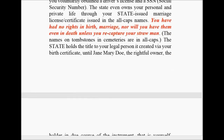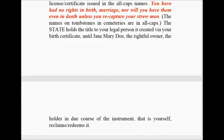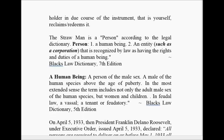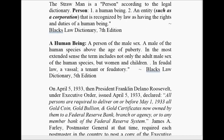The names on tombstones and cemeteries are also in all caps. The state holds the title to your legal person, created for your birth certificate. That's why they give you a certificate, not the actual title. The holder in due course of the instrument — that is yourself — has to reclaim and redeem it. The straw person is a person according to the legal dictionary: a human being, or an entity such as a corporation, that is recognized by law as having the rights and duties of a human being. So this is how they give you the rights, but don't acknowledge you as being a human being. According to Black's Law Dictionary, which they use in the Roman Catholic law system, a human being is a male of the human species above the age of puberty. In feudal times, it was a vassal, a tenant, or feudatory.